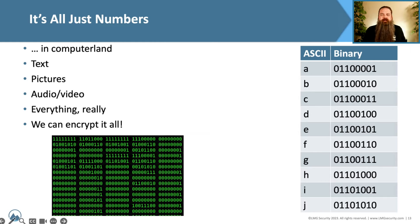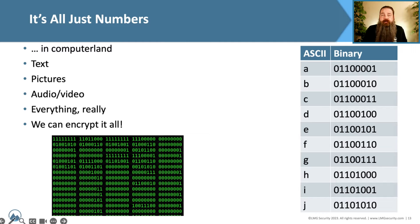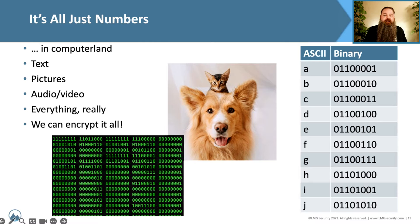If we look at something on the back end, every piece of data that you look at, every picture you look at, every movie you watch online — all of it is just a series of ones and zeros. And we can encrypt that. It's all just math to us, which is really, really nice — including something like this picture of a dog with an adorable kitten. All of this on the back end is just a series of ones and zeros.